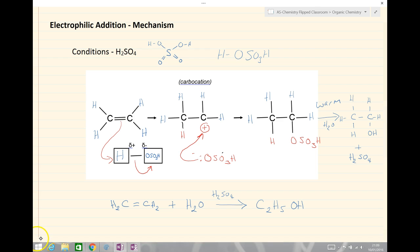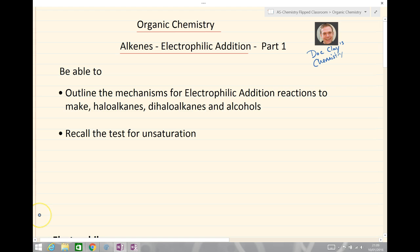That brings us to the end of the lesson. We'll have a quick recap and see where we go next time. So in Electrophilic Addition Part 1 Alkenes you should now be able to outline the mechanisms for electrophilic addition reactions to make haloalkanes, dihaloalkanes and alcohols, and also recall the test for unsaturation. Okay next time we'll look at Part 2 for Electrophilic Addition.